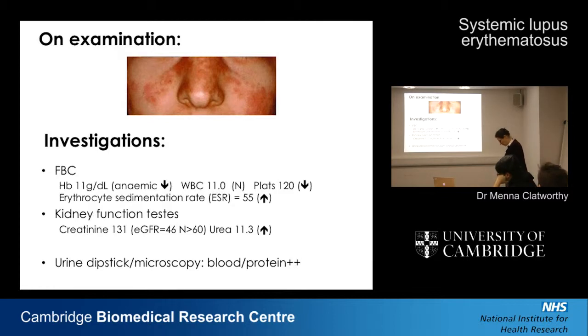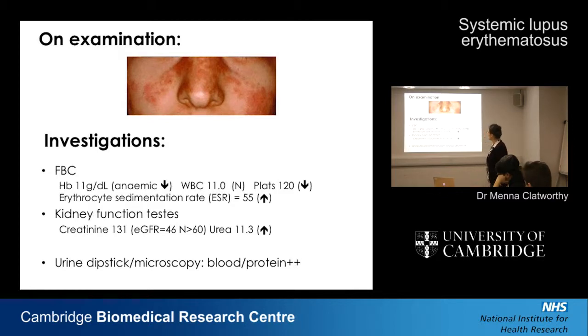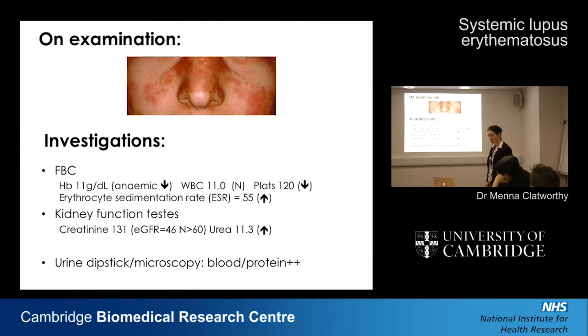This is the rash that she had. This sort of rash has been dubbed a butterfly rash — you can see why it has the shape of a butterfly. We went on to do a number of blood tests, including looking at whether she was anemic. In fact she was anemic, and her white blood cell count was at the top end of normal.